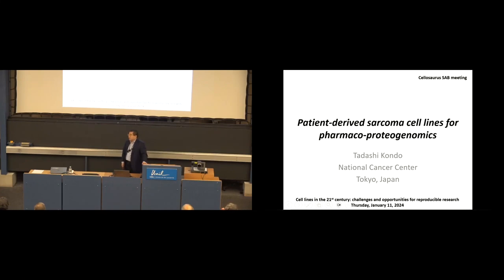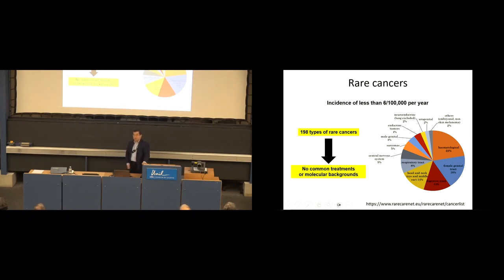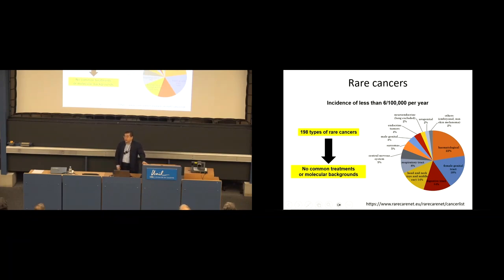In my talk, I'm going to discuss cell line establishment for sarcomas. You may think cell lines are easily available from public cell banks, but that's not so true, especially in the field of rare cancers. Rare cancers are defined according to extremely low incidence — when the number of people newly diagnosed with a certain malignancy is less than 6 per 100,000 per year, we call those malignancies rare cancers.